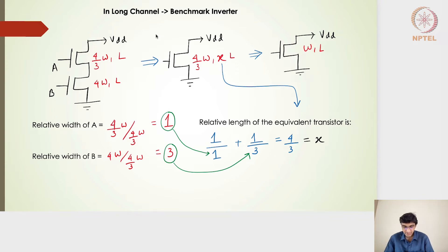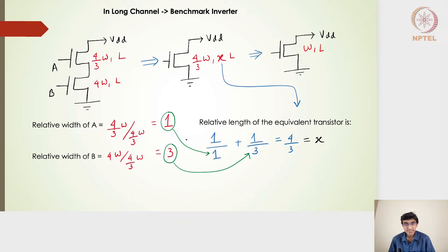In the long channel model, if we have a 4/3W transistor, the two transistors considered as the pull-down circuit of the two-input NAND gate — one having a width of 4/3 and the other having a width of 4W — have the same channel length. The equivalent single transistor is 4/3W with length xL, where x is the sum of the reciprocals of the relative widths. The relative width of transistor A is 4/3 divided by 4/3, which is 1, and transistor B is 4 divided by 4/3, which is 3. The reciprocals are 1 and 1/3, summing to x = 4/3.